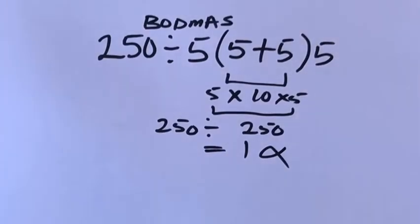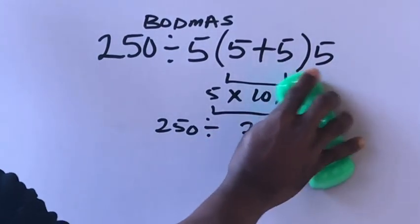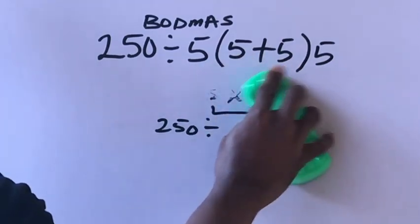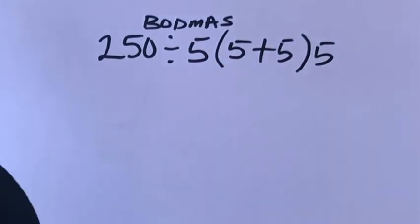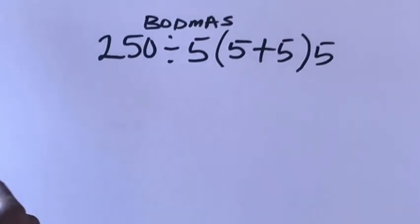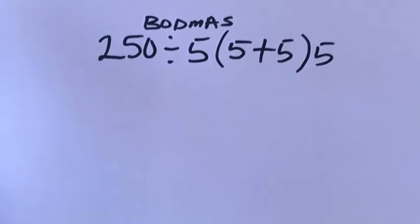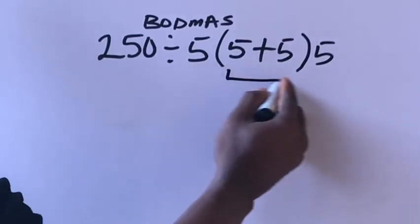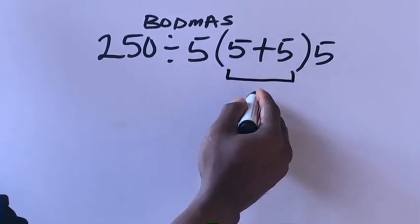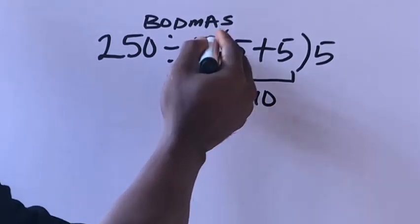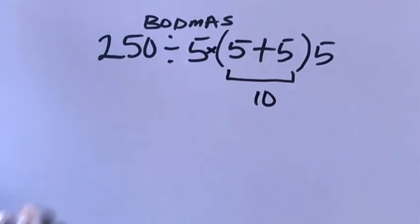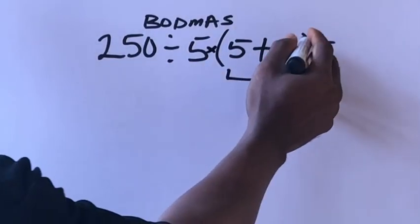First of all, we have to solve what's inside this bracket. This times this plus this, 5 plus 5 will give us 10. Remember that when your number is close to parenthesis, there's an invisible multiplication there, so you have to multiply.